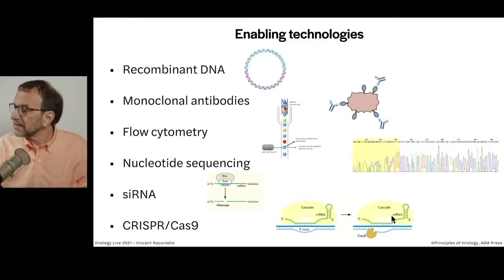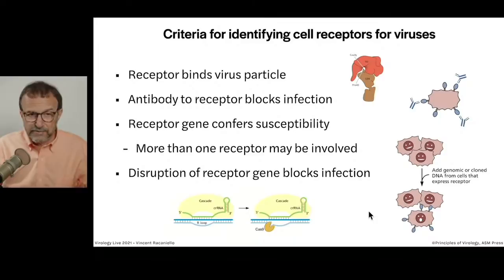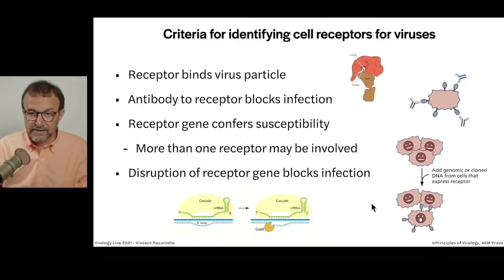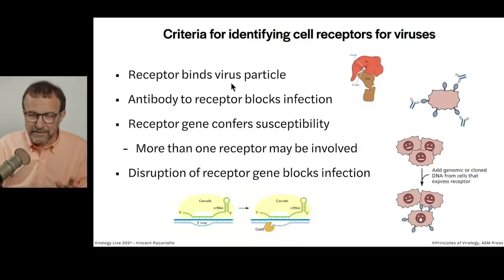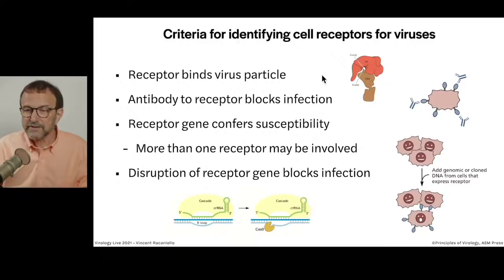These enabling technologies have allowed us to fill this lecture with interesting receptors and how viruses attach to them. To prove that a gene encodes a receptor for a virus, there are several criteria. First, you have to show that the receptor actually binds the virus particle. Ideally, you purify the receptor protein and show that it binds your virus particle. Here's a diagram of the receptor for HIV-1, a host molecule called CD4, which binds specifically to the envelope protein of HIV.